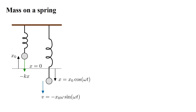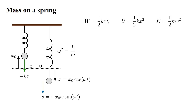And its velocity is minus x₀ omega sine(omega t), where omega squared equals the spring constant k over the mass m. The work we put into the system to move the mass to its initial position is w equals one-half k x₀².